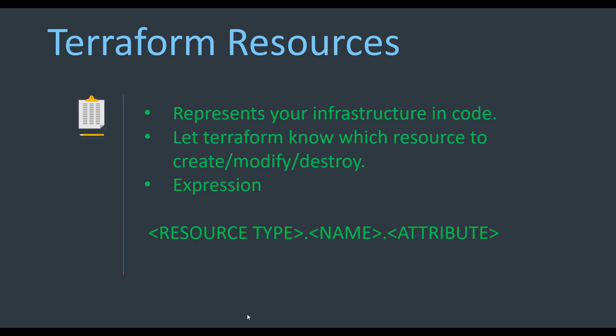By definition, a resource block represents your infrastructure in code. By reading the resource block definition, Terraform commands decide whether a particular resource needs to be created, modified, or destroyed. Without a resource block, you would not be able to create anything in the cloud or any infrastructure. The resource block uses the resource type, the name, and then attributes.